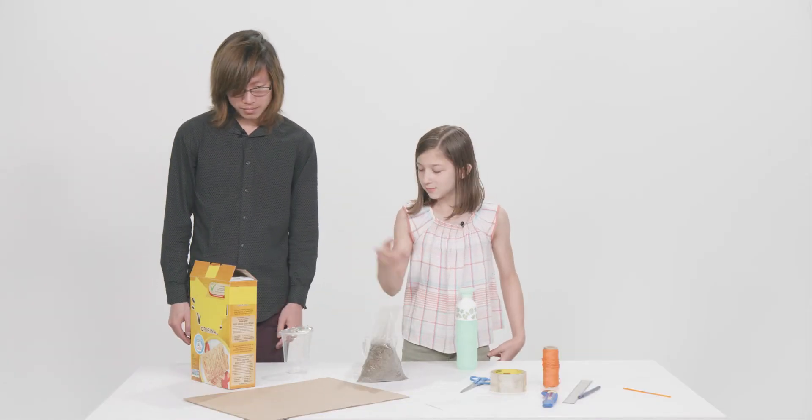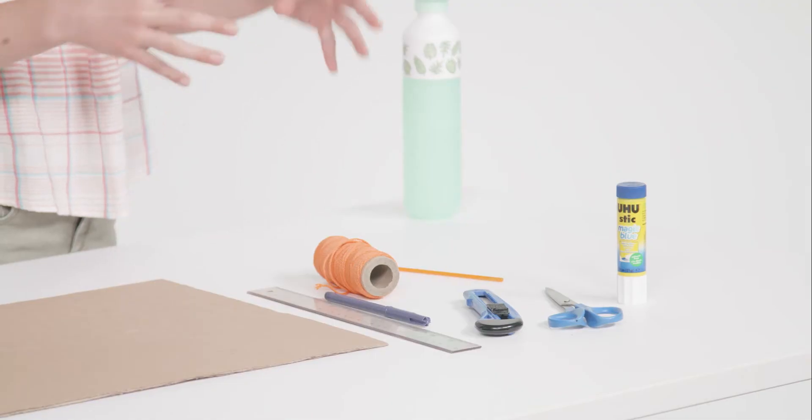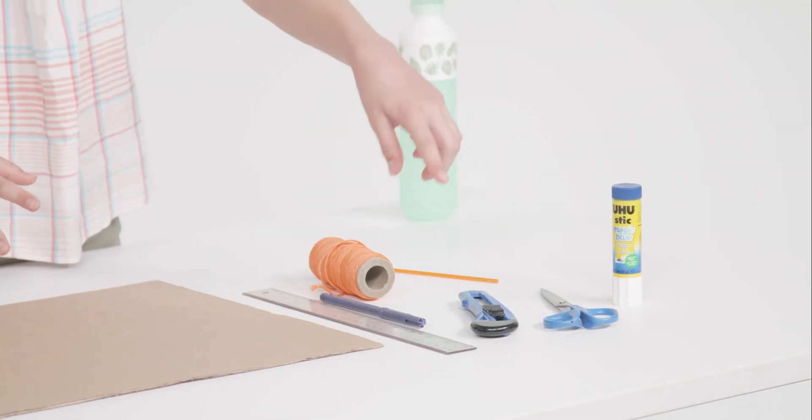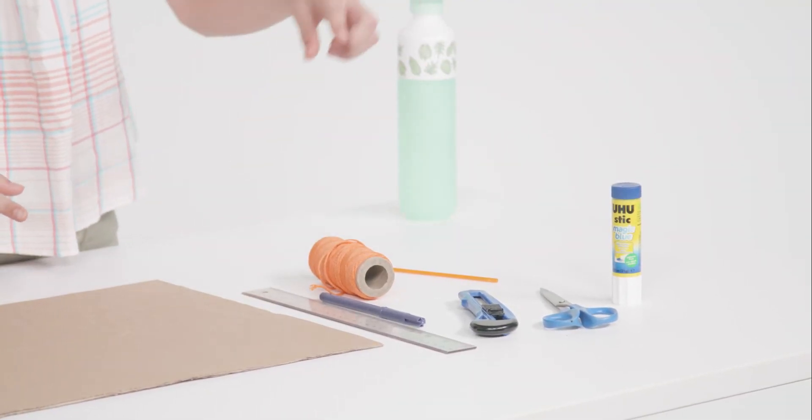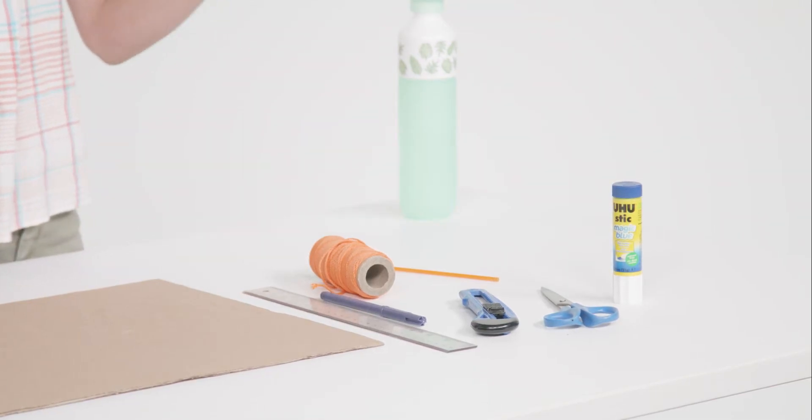Okay, Kevin, these are our main materials right here. So first we have our cereal box, cardboard sheet, some sand, and a plastic cup. And we have our glue, scissors, X-Acto knife, ruler, pen, and string, and a straw.